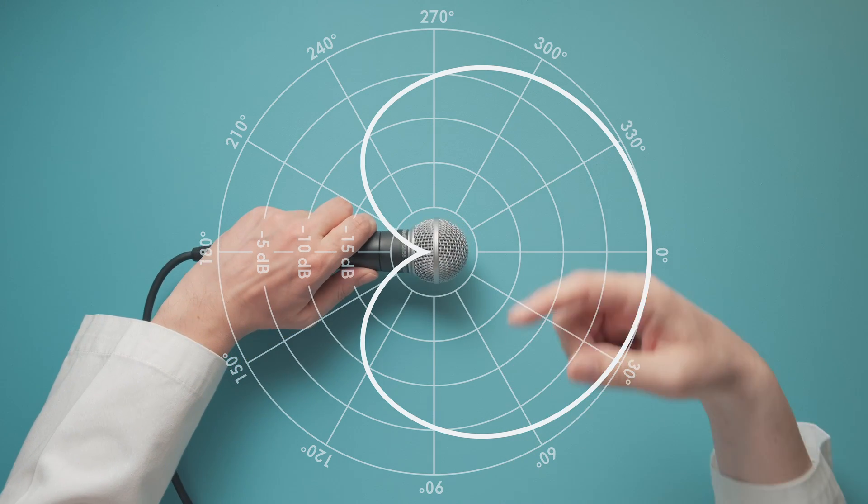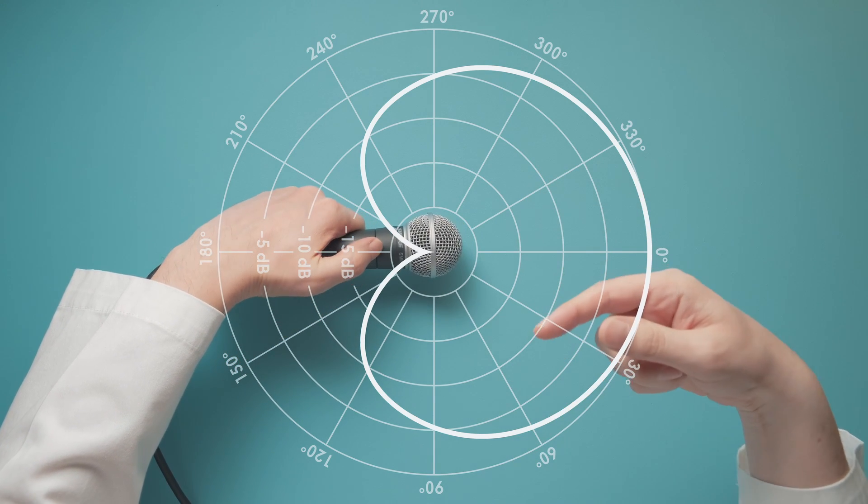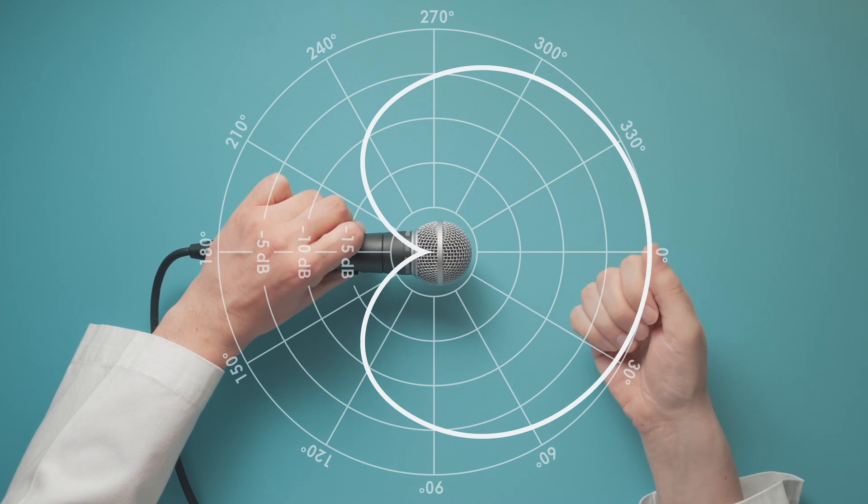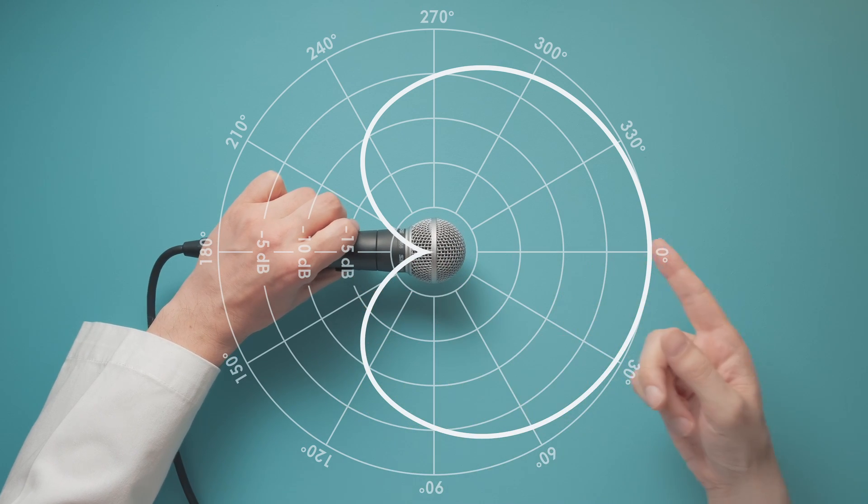By the way, it doesn't matter if I rotate the microphone along its zero degree axis. The polar pattern is three-dimensional. This means it's the same in every direction relative to this axis.